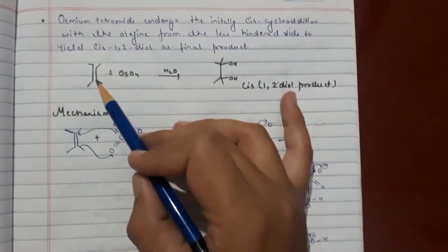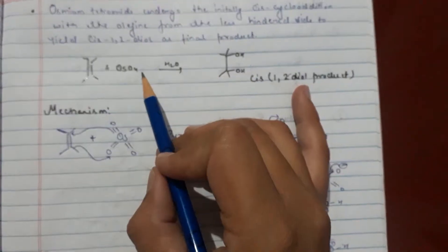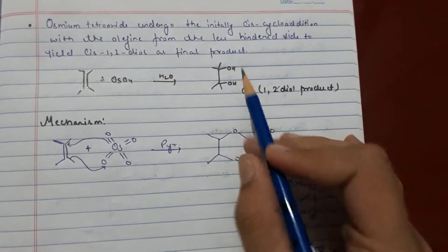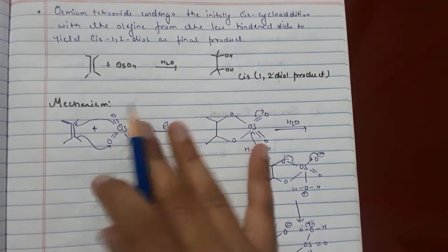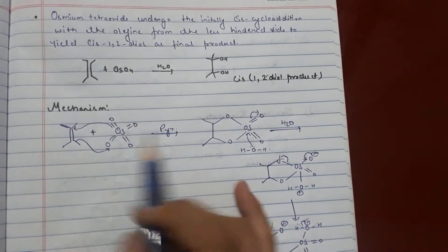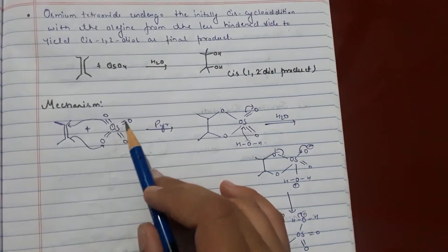This is alkene double bond plus Osmium Tetraoxide. It will give cis-1,2-diol product. So mechanism of this one: this is alkene double bond and Osmium Tetraoxide.